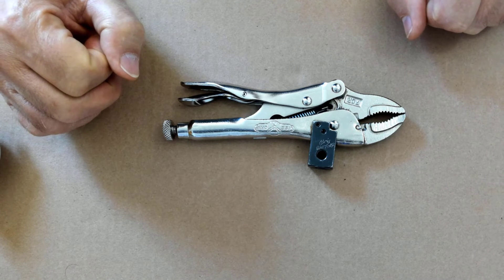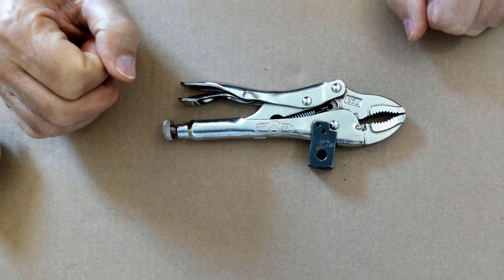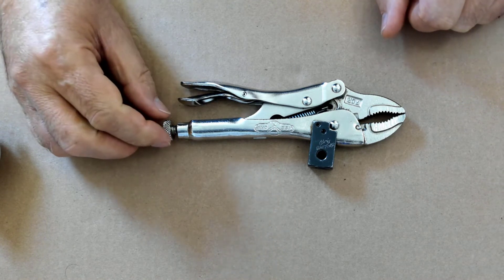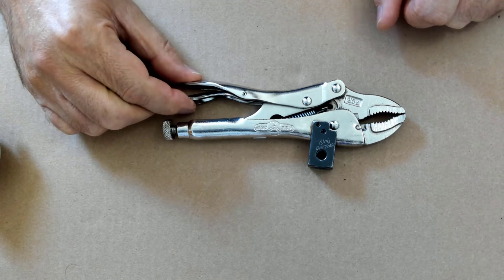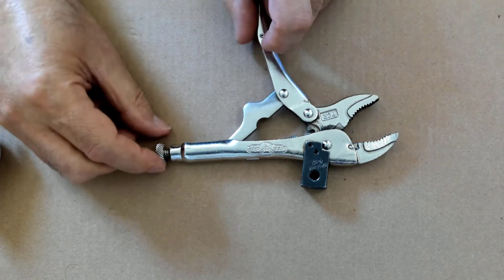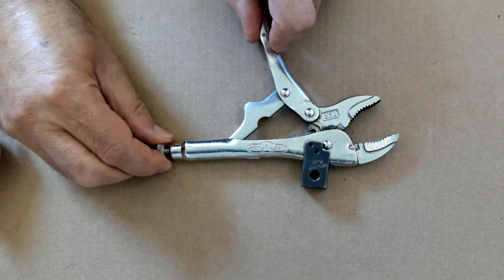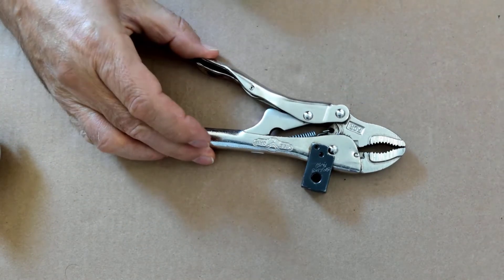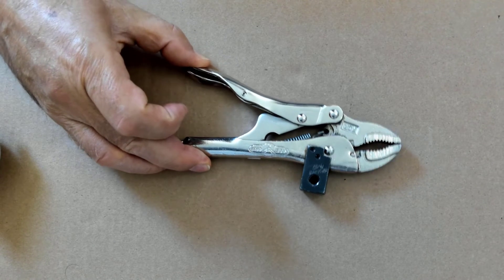That'll hold the vise grip solid on the object that you are clamping to. It also makes it more difficult to release the vise grips. If you make the threaded screw a little bit too tight, you won't be able to clamp all the way down or it'll be really difficult.